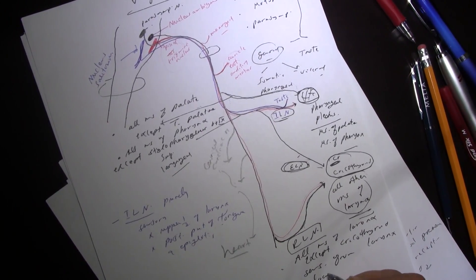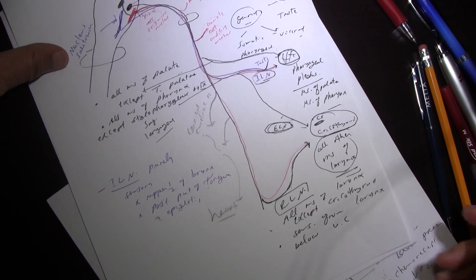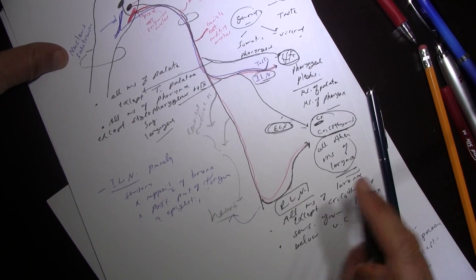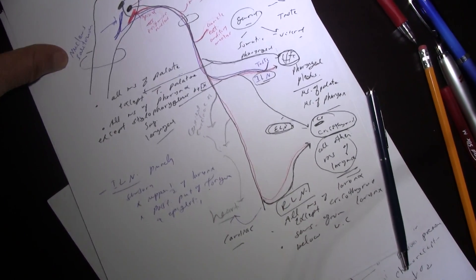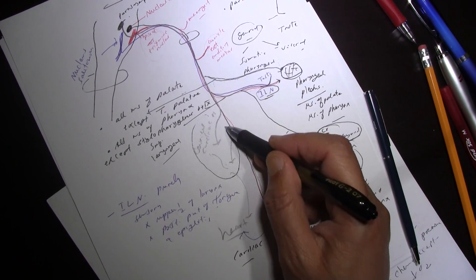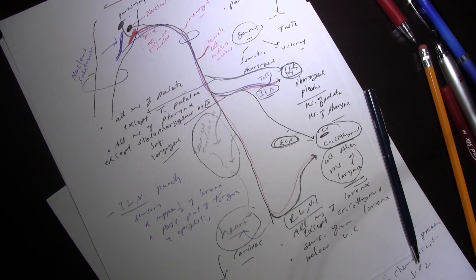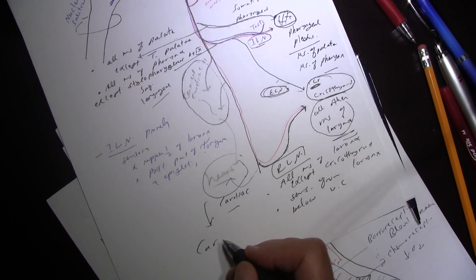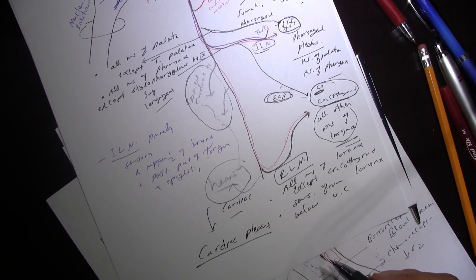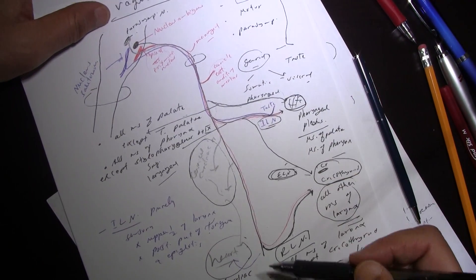The recurrent laryngeal nerve also sends cardiac branches to the heart. Together, the cardiac branches of the vagus and the recurrent laryngeal nerve form what is called the cardiac plexus. We'll learn more about it in the chest. Those are the branches of the vagus in the neck.